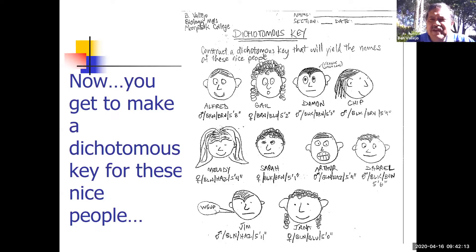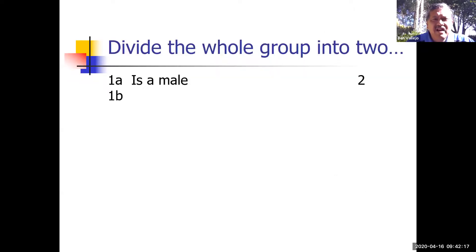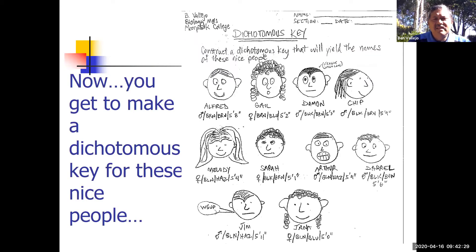At any rate, let's go on. Take a look. What you got to do is divide the whole group of ten critters into two. So the easiest thing, as you look back, is well, some are males...